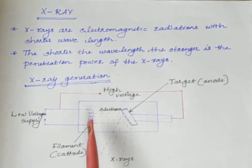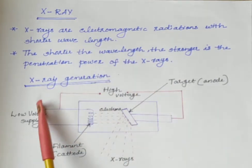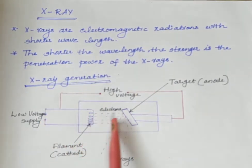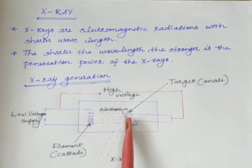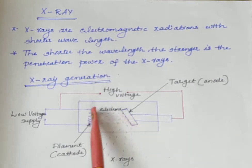Electrons are emitted by the filament, that is the cathode, when it is heated by a low voltage supply. The electrons are then accelerated by the high voltage and sent towards the target, that is the anode. And the X-rays are produced when electrons hit the target.